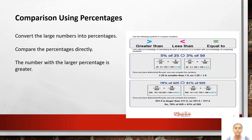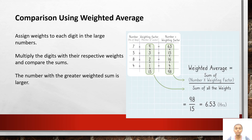Comparison using percentages: convert the large numbers into percentages. Compare the percentages directly. The number with the larger percentage is greater. Comparison using weighted averages: assign weights to each digit in the large number. Multiply the digits with their respective weights and compare the sums. The number with the greater weighted sum is the larger one.